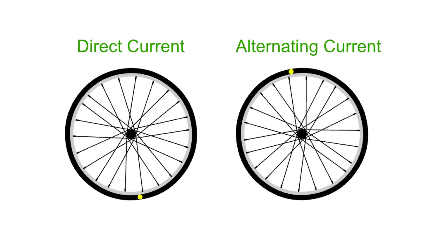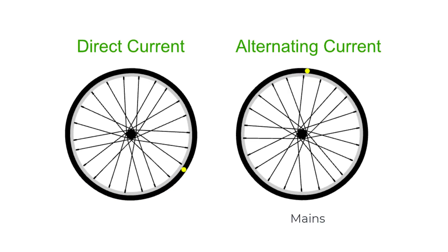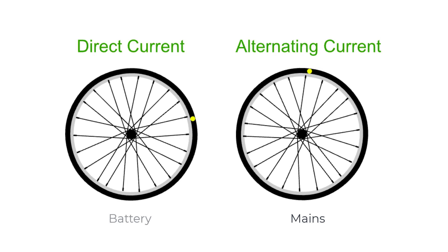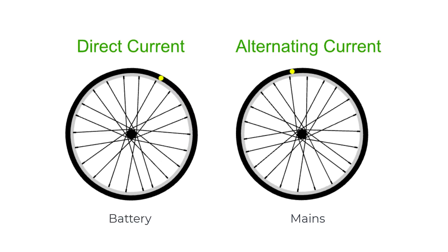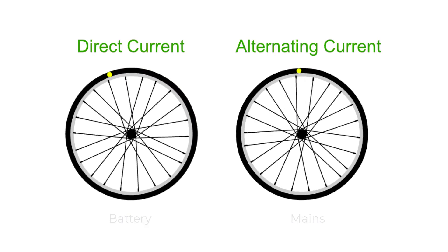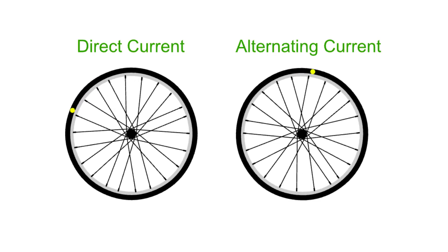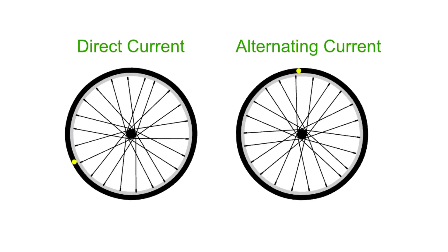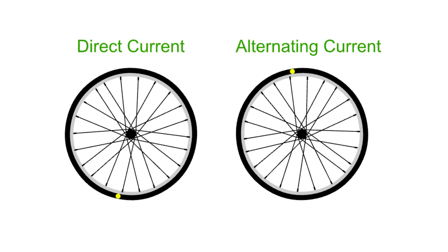The mains is AC or alternating current electricity. Batteries are DC or direct current devices. With AC the current rapidly changes direction all the time. It's like this bicycle wheel.